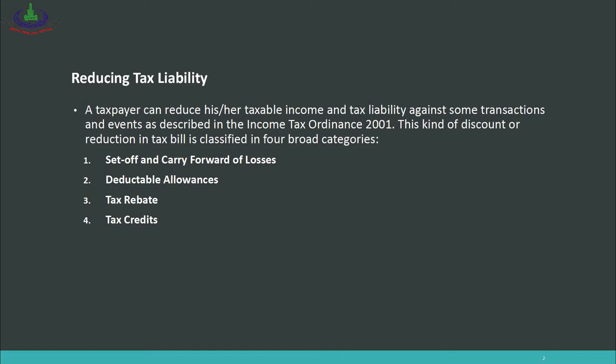The second category is deductible allowances. Certain transactions, if incurred, can reduce your tax stability and thereby reduce your taxable income. The third category is tax rebate — this is a direct discount which reduces your tax payable.